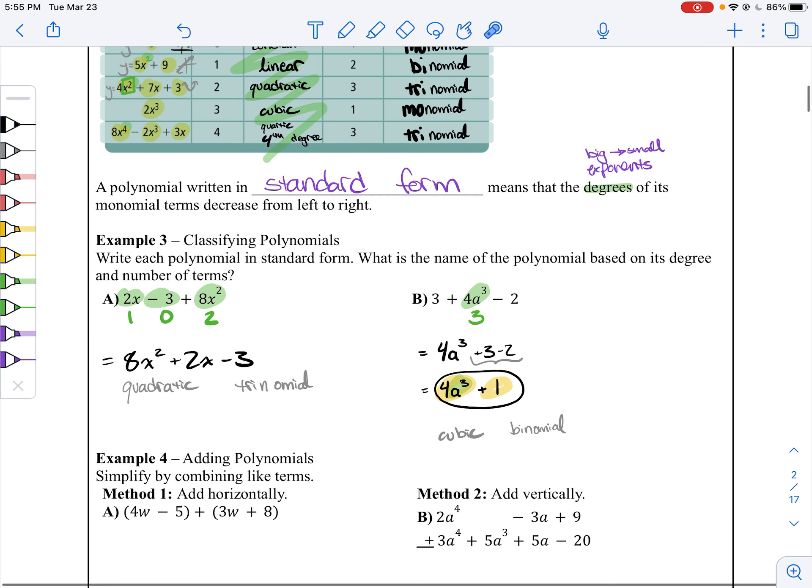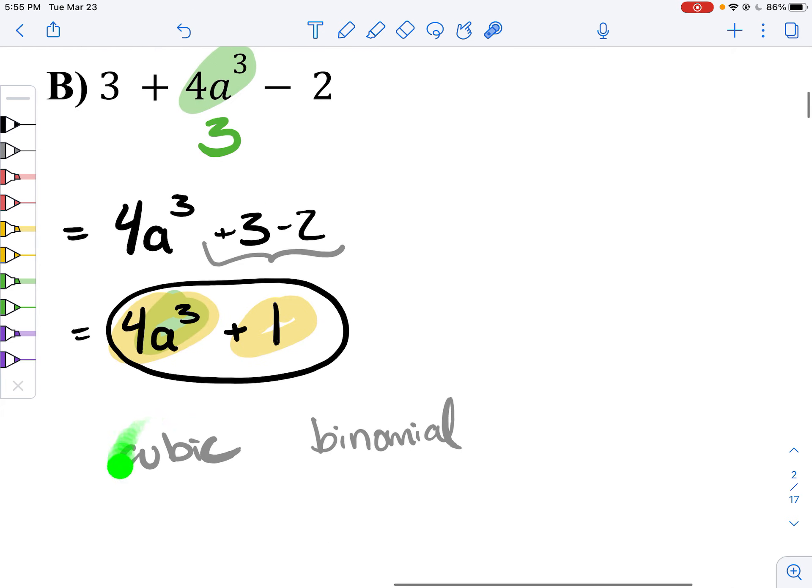By the way, if you have trouble remembering cubic, quadratic, stuff like that, you can literally just say, oh, it's degree three, it's a binomial with degree three, or it's a third degree binomial. Those are all totally fine.